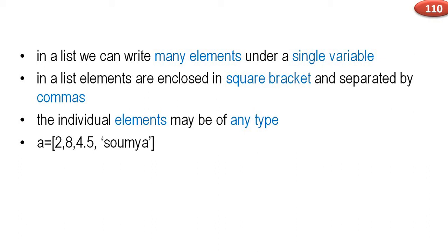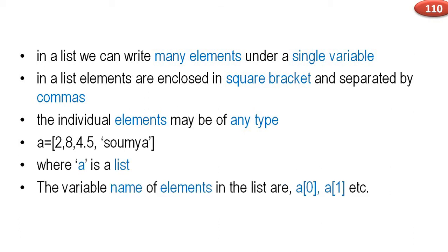Consider an example. List a is assigned square bracket with values like 284.5. A list is a collection of elements. In this example, a is a list. The variable names of elements in the list are a of 0, a of 1, etc.